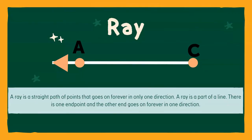The last one that you should know is called a ray. A ray, just like all of the others, is a straight path of points that goes on forever, but only in one direction. A ray is a part of a line, like a line segment, and it's also like a line because it goes on and on — but only in one direction. A line goes on and on in two directions; a ray goes on and on in just one direction. So a ray has a starting point but it doesn't have an ending point. There's usually one end point and the other end goes on forever in one direction.